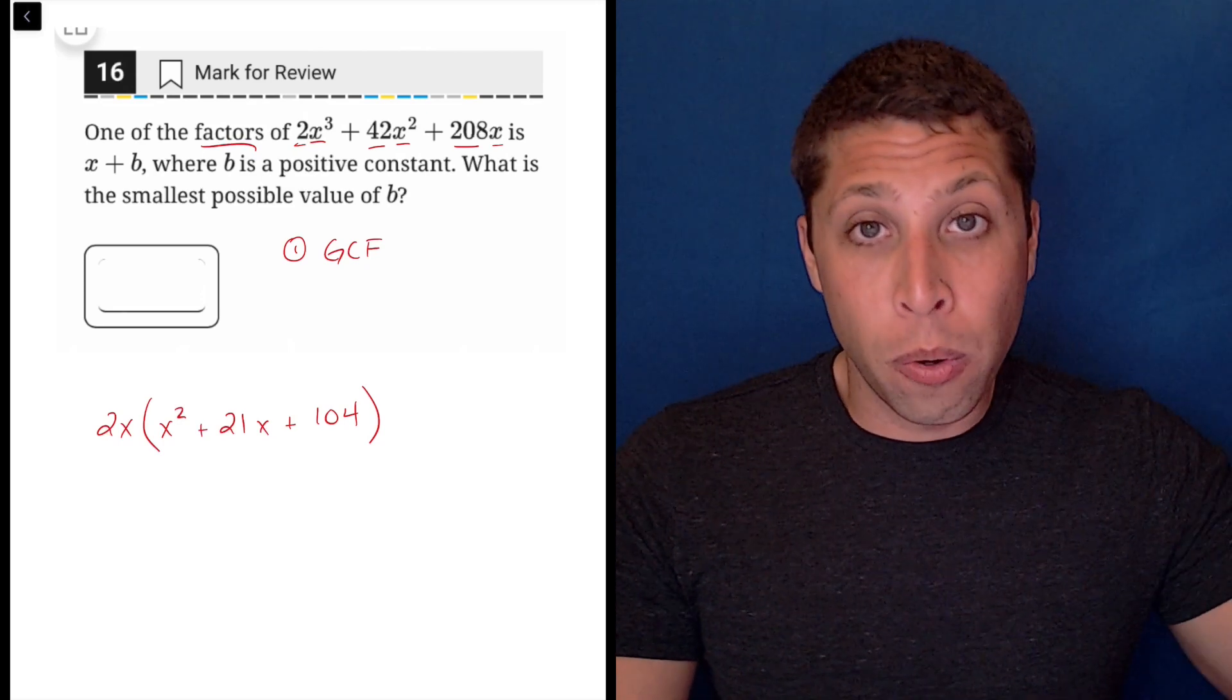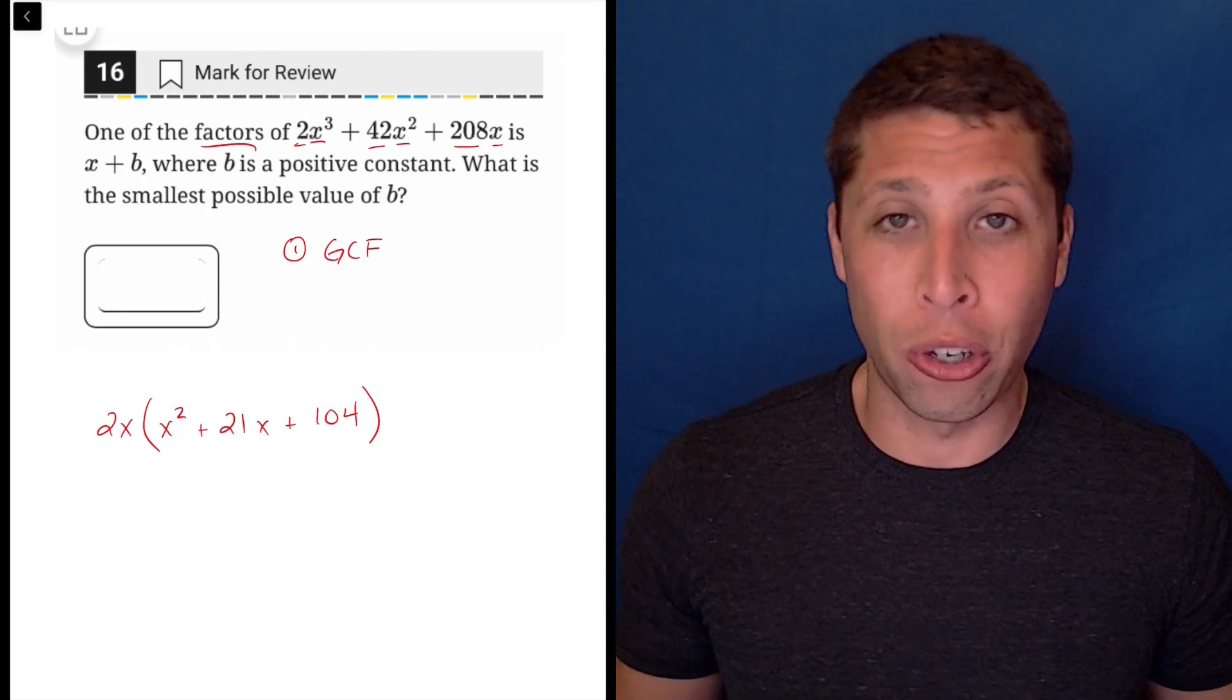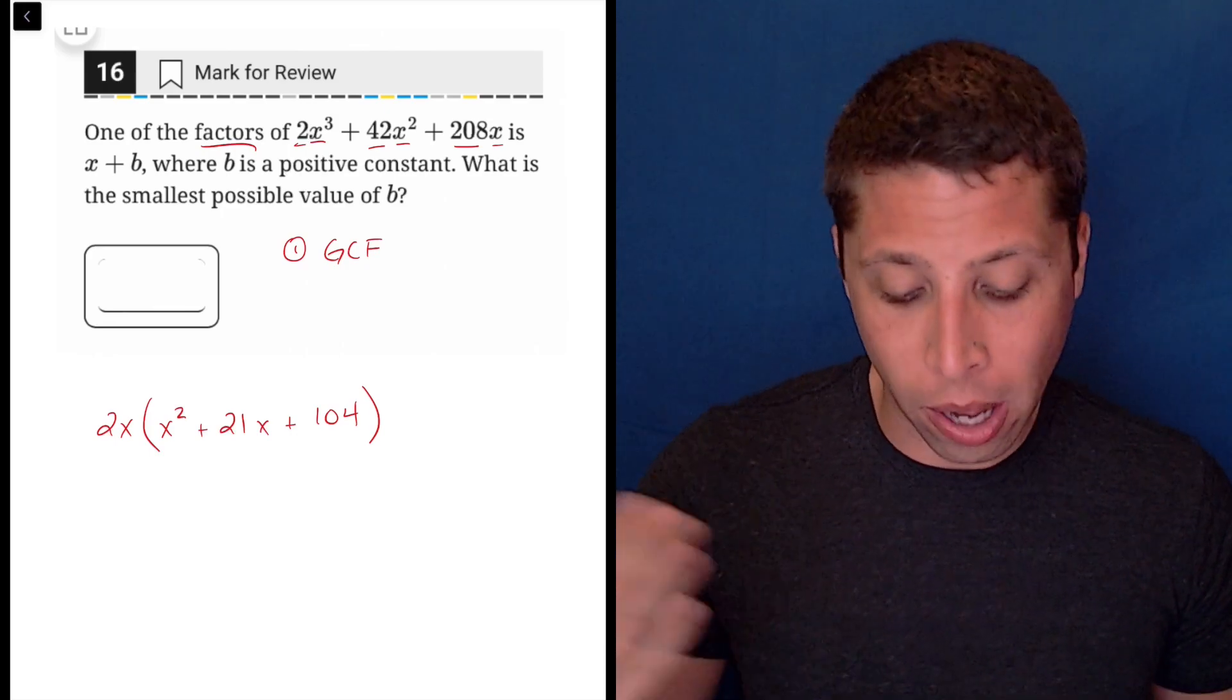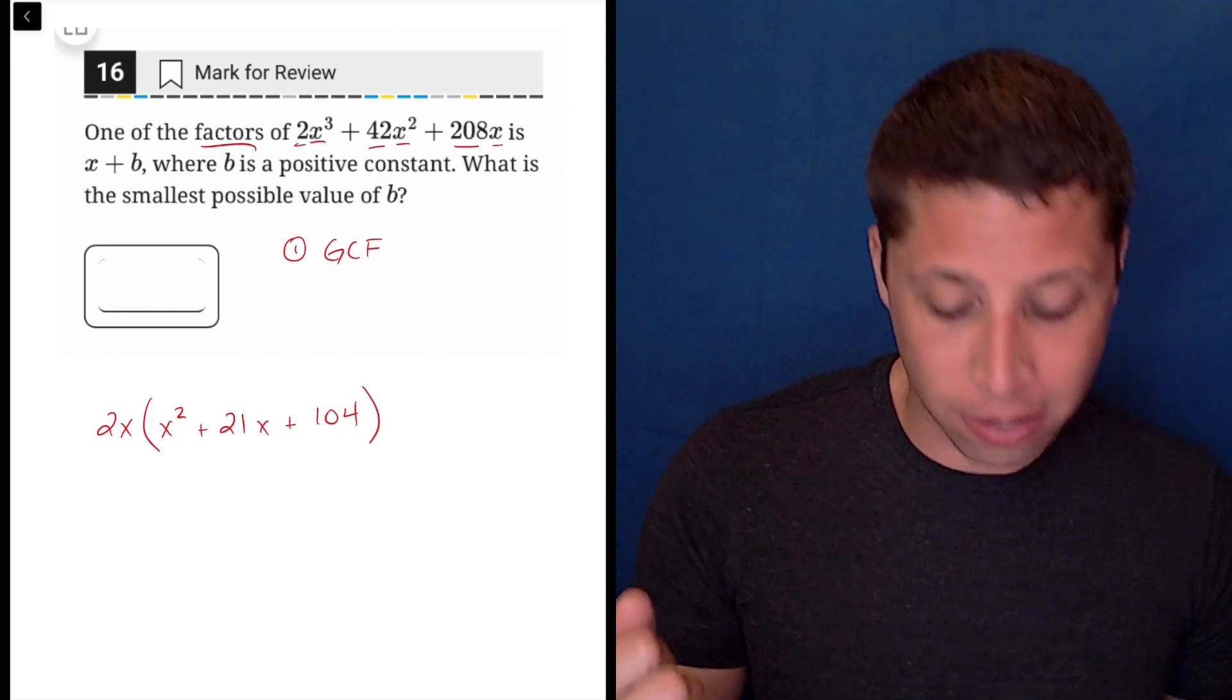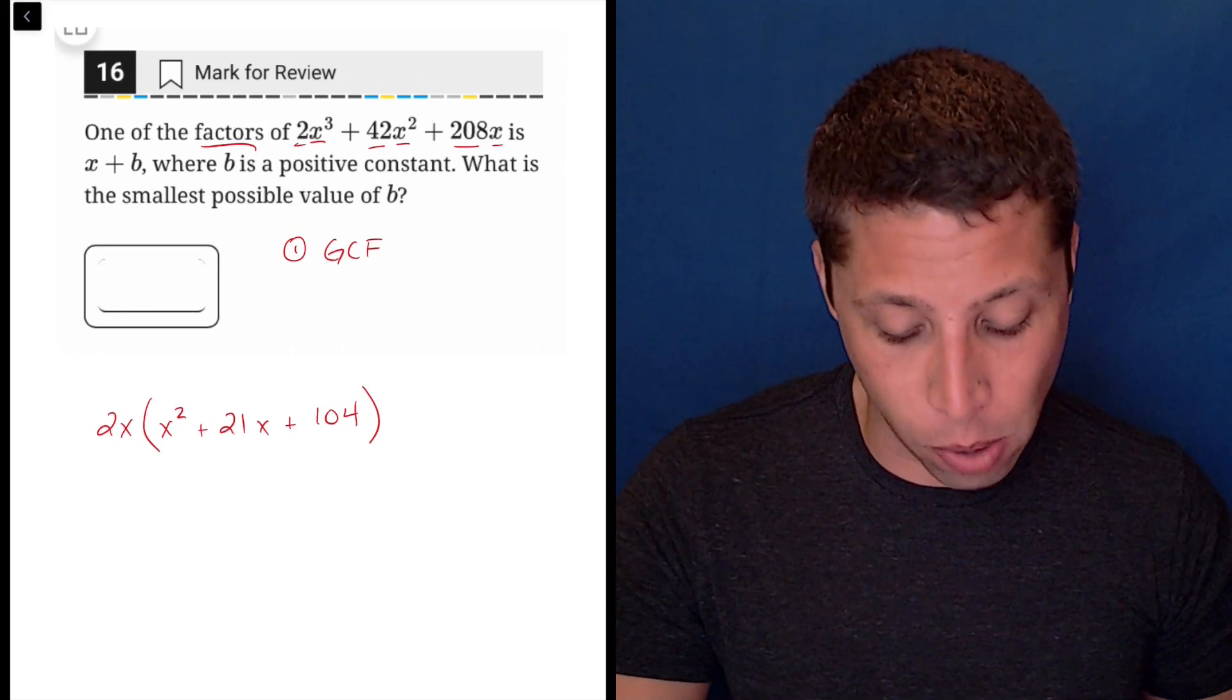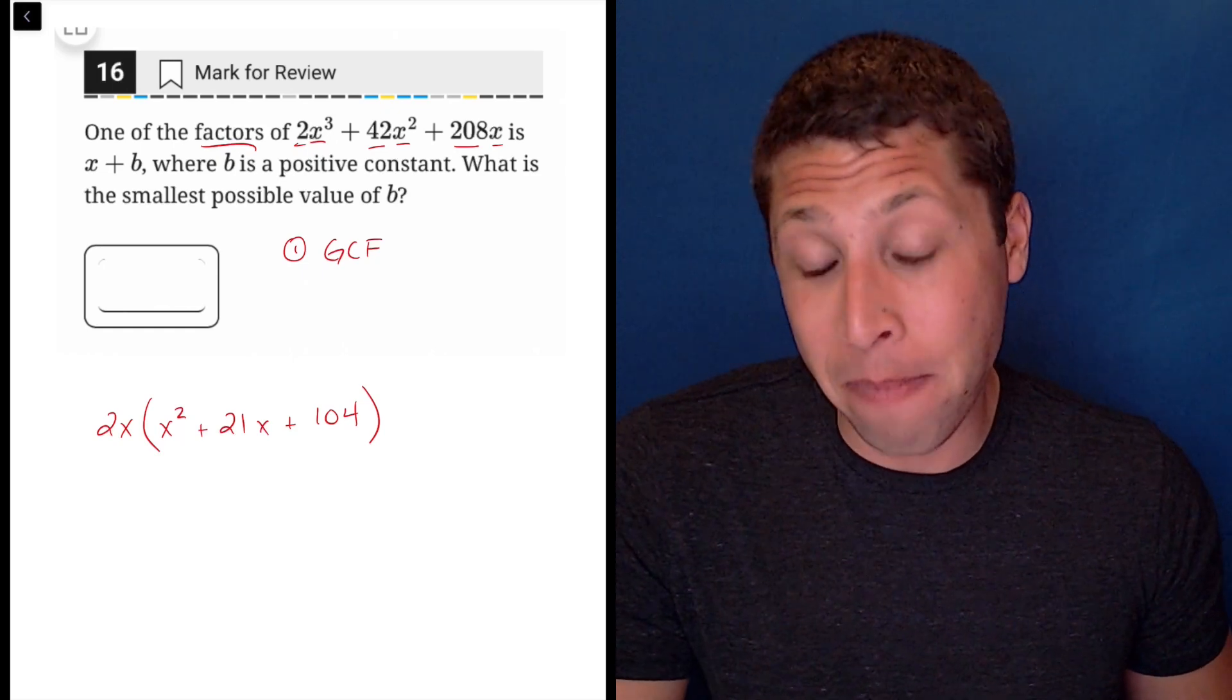Remember, factoring is like reversing distribution. If you're ever unsure if you factored correctly, just distribute it back in to check. If I multiply each of these by 2x, I get 2x times x squared is 2x cubed, plus 42x squared, plus 208x. It all works out back to where I was. Now, even though the x is pulled out, I've got this other piece that's in better territory. This is a quadratic.